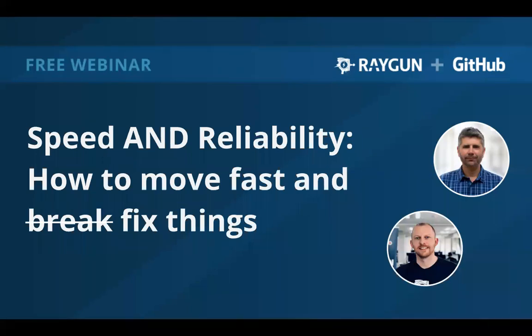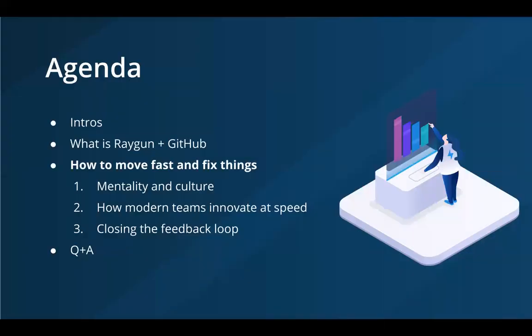We've got plenty of people on the line, so let's crack into it. This exclusive webinar, brought to you by Raygun and GitHub, is going to talk about speed and reliability — how to move fast and fix things. We'll run through the agenda very quickly. They're going to cover what Raygun and GitHub are, then jump into the discussion. We've got the Q&A section in Zoom, so please add your questions. We're going to give plenty of time for Q&A after the slides.